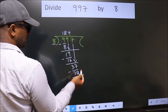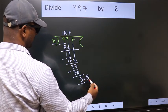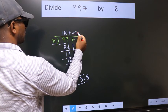No more numbers to bring down. So we stop here. This is our remainder, and this is our quotient.